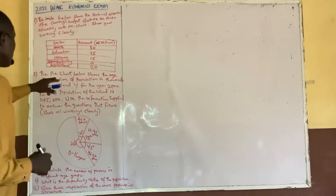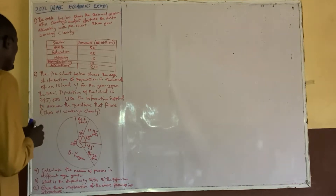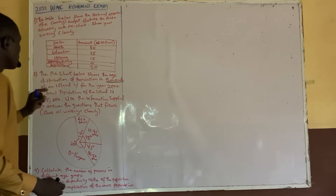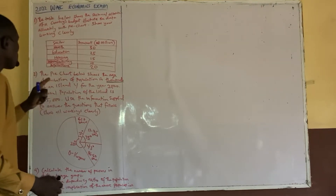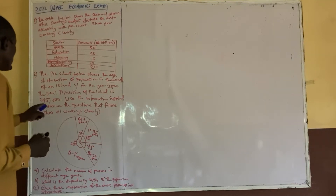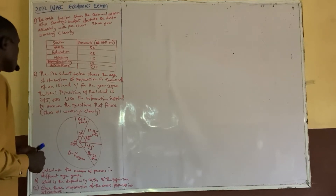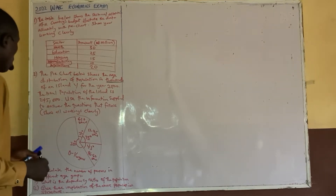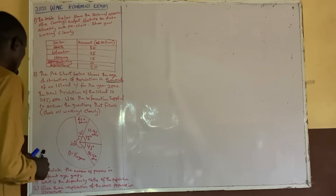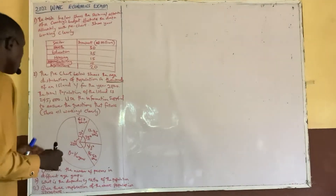Here is another question on pie chart. The pie chart below shows the age distribution of population in thousands for an island, for the year 2000. The total population of the island is 245,000. Use this information to answer the questions as follows. Show all working clearly. We have to calculate the number of persons in different age groups.